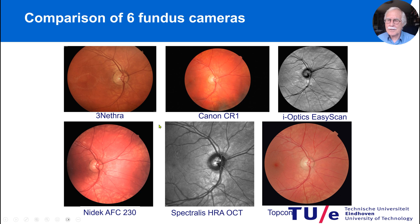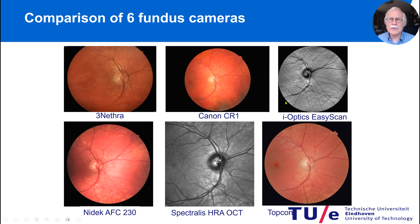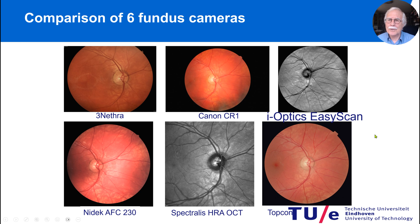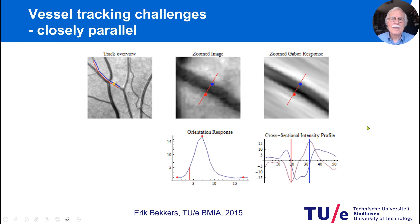Of course, we had different cameras, different shops, different hospitals, different areas where images were taken. We compared six different fundus cameras using all our quantified computer vision techniques, and it turns out the results were very similar. Finally, we decided to take the iOptics EasyScan camera — a laser scan that was low cost and at sufficient quality to do all the screening.